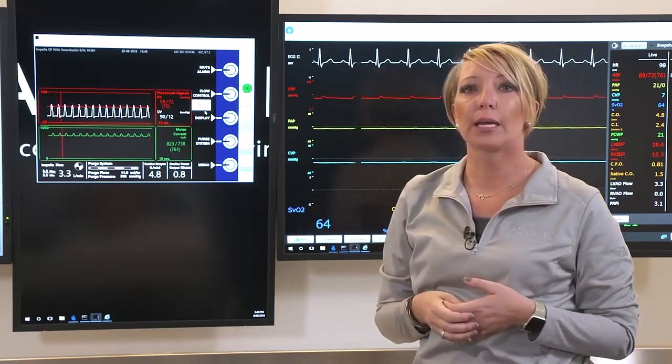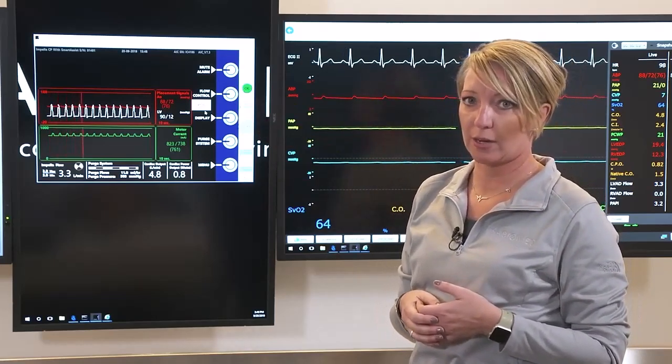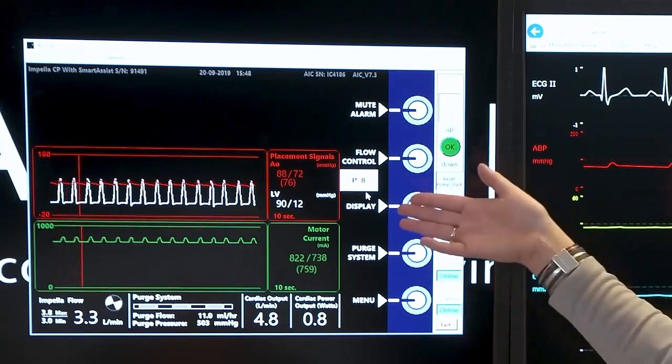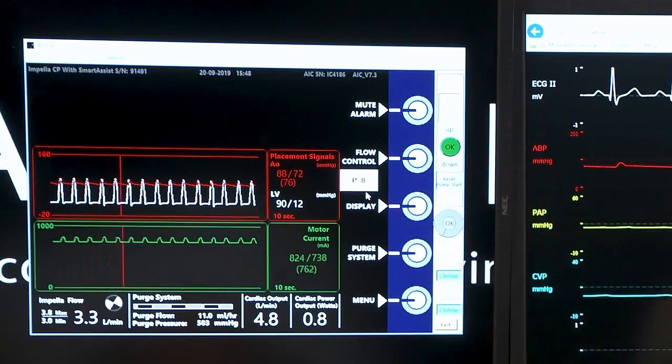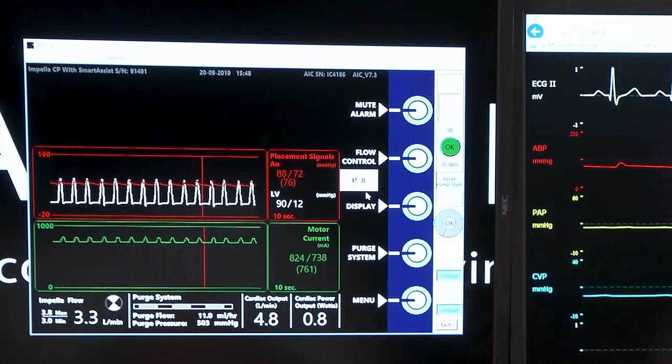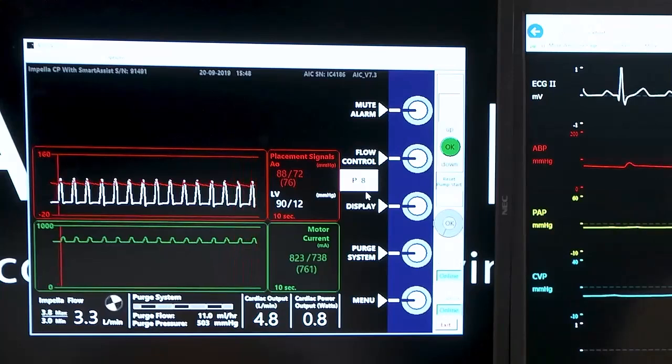Display is going to be anytime you want to change what you're looking at on the screen. 99% of the time you will have it on the placement screen, which is going to give us our placement signal and our motor current. But you could also use this display button if you wanted to look at your infusion history or if you wanted to show family the picture of where the Impella sits within the heart.